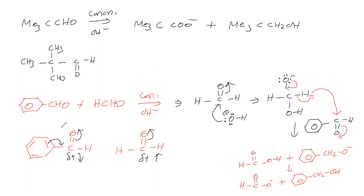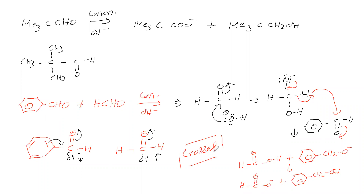Therefore in the cross-Cannizzaro reaction: formaldehyde undergoes oxidation to give formate anion, and benzaldehyde undergoes reduction to give benzyl alcohol. This is called a redox reaction — not disproportionation, because it is not the same substance undergoing both oxidation and reduction. Therefore this reaction is called the Cross-Cannizzaro reaction — one aldehyde undergoes oxidation and another (different) aldehyde undergoes reduction.